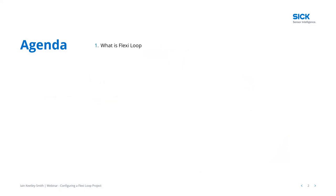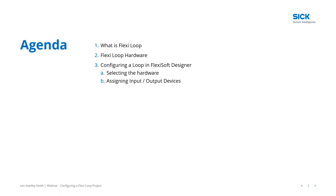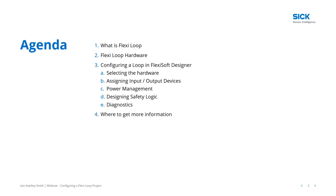Looking at the agenda for today's webinar, we're first going to look at what is FlexiLoop. We'll then look at the hardware and how you select it. We will then configure a loop within FlexiSoft Designer, covering choosing the appropriate hardware, assigning input and output devices onto that loop, and power management. There's a piece of software built into FlexiSoft Designer which allows you to see how power is being managed within the loop. We'll then design some safety logic, look at diagnostics, find out where to get more information, and look at future webinars coming up.